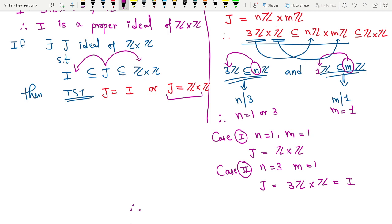So therefore, there does not exist any super ideal of I which is proper ideal of it, such that I can conclude now my I is a maximal ideal of Z×Z.